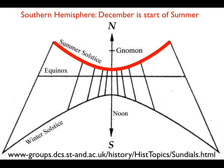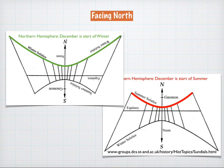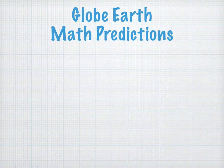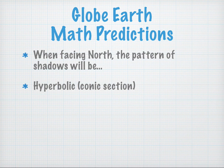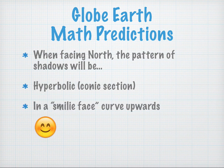But in the southern hemisphere, December is the start of summer. Again, we're facing north. The sun is in front of us. So the gnomon is in front of us. And please notice that the curve is a tighter curve because the shadows are shorter because the sun is higher up in the sky. To summarize, when we're facing north, it doesn't matter if we're in the northern hemisphere or the southern hemisphere. It doesn't matter if it's winter or summer. When we're facing north, the December solstice will be a hyperbola. Here are our predictions. Facing north, the pattern of shadows will be a hyperbolic or a conic section and it'll be in a smiley face or it'll be curving upwards.